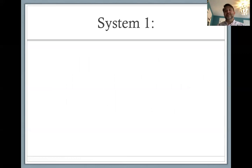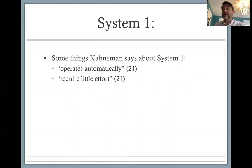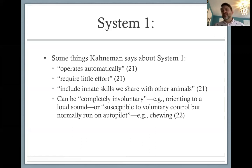System one is the more automatic process. Kahneman says it operates automatically, requires little effort, and includes innate skills that we share with other animals — getting back to the idea of innate traits making up the human mind. It can also be completely involuntary — for example, orienting to a loud sound. If I hear an explosion behind me, I will turn automatically to look. That's a kind of behavior guided by brain or mental activity that occurs involuntarily.